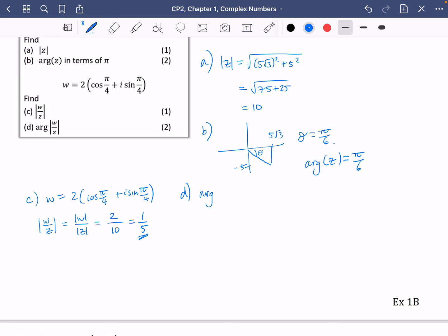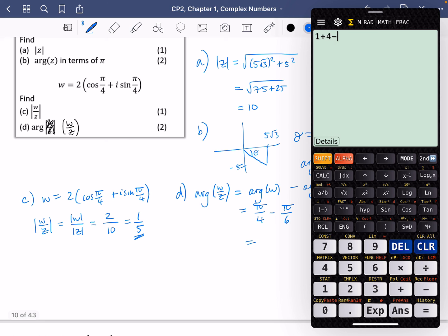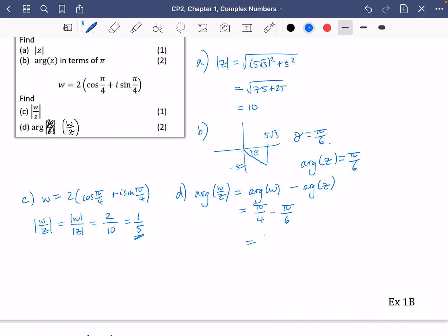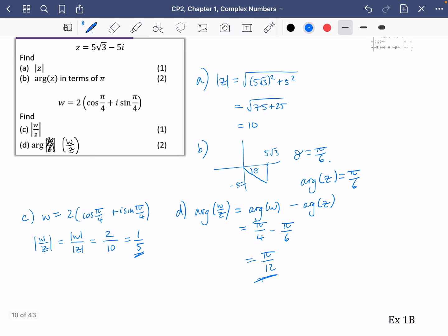It then wants us to find the argument of w divided by z. We know that's the argument of w subtract the argument of z. Well, the argument of w is clearly pi over 4 and the argument of z is pi over 6. So it's pi over 4 subtract pi over 6. 1 over 4 minus 1 over 6 is 1 over 12. So the argument of w over z is pi over 12. And that should be enough work to be able to get you on with exercise 1B.